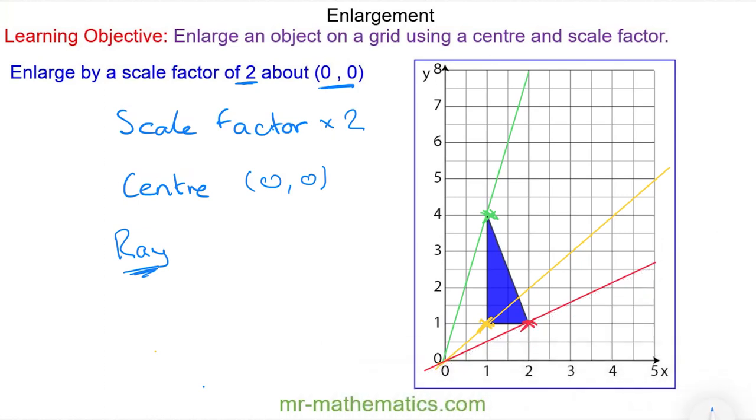So now I've created three rays I'm going to enlarge the object. To go to the yellow vertex at (1,1) I need to go one across and one up. I'm going to double on this now because the scale factor is 2. So another one across and another one up. So the vertex at (1,1) is enlarged to the coordinate (2,2).